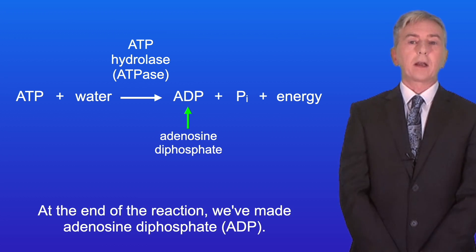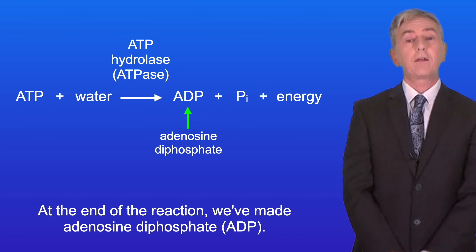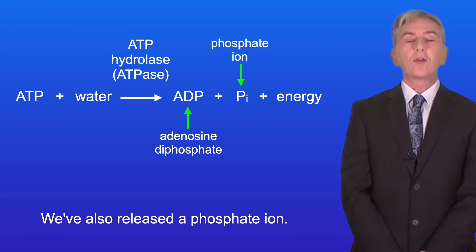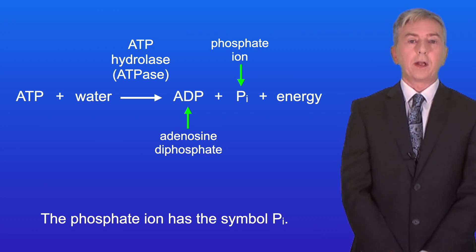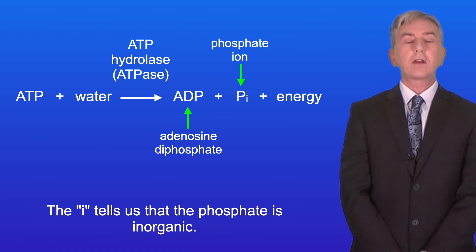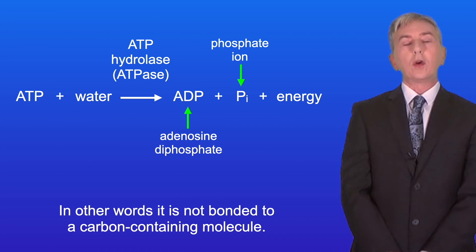At the end of the reaction we've made adenosine diphosphate or ADP. We've also released a phosphate ion. Now the phosphate ion has the symbol Pi. The i tells us that the phosphate is inorganic. In other words, it's not bonded to a carbon containing molecule.